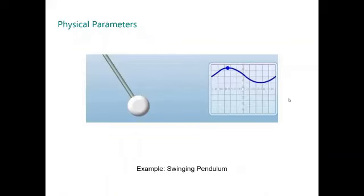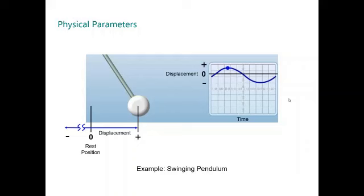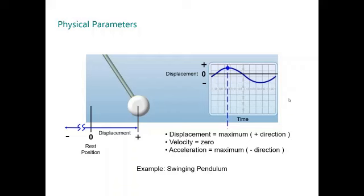Now with the pendulum, we can correlate the physical parameters: acceleration, displacement, and velocity. When the pendulum is displaced from the center or the equilibrium position, then it moves. When the displacement is at the maximum, the velocity is zero, and the acceleration is maximum but in the opposite direction.